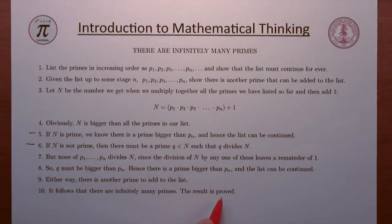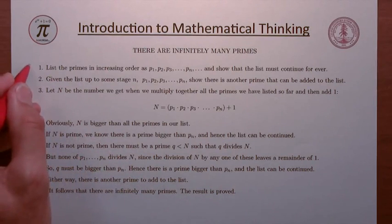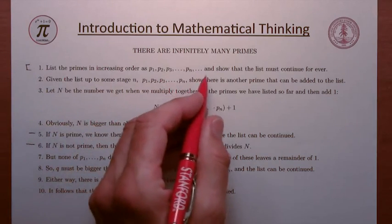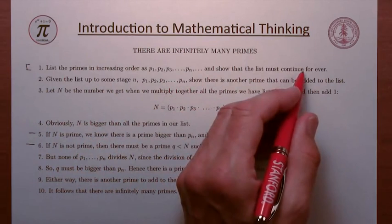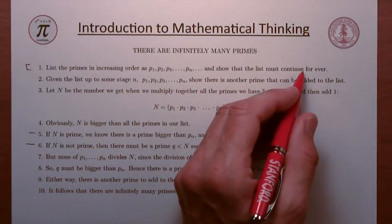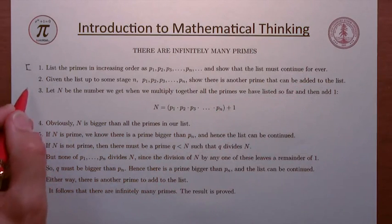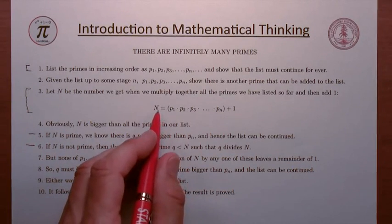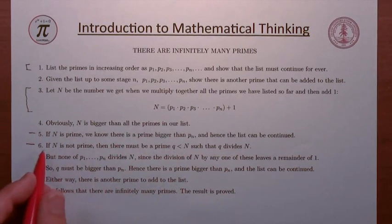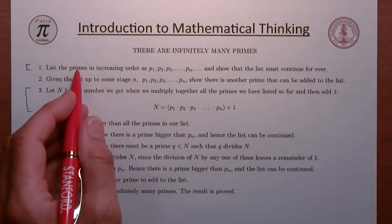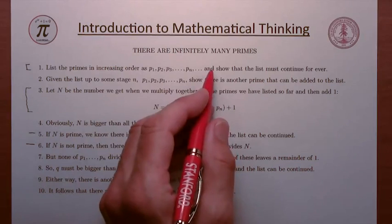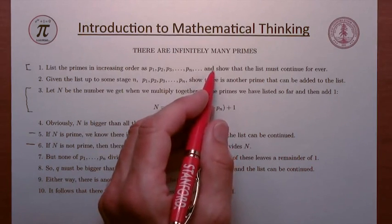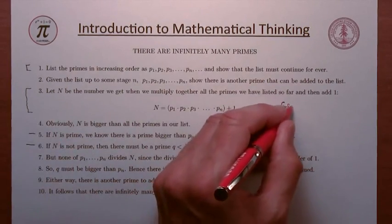There are two creative ideas in this proof. The first is to think about listing the primes in increasing order and showing that the list can always be continued. The second creative idea is defining the number N in such a way that it guarantees we can always find another prime. The first idea is one that most mathematicians would come up with sooner or later — it's a fairly obvious one. The second one is genius. This is true genius.